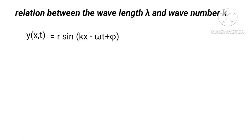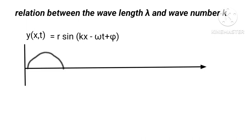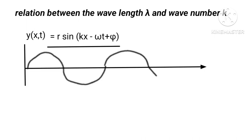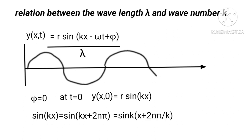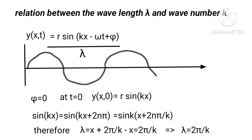Let us consider a transverse wave y(x, t) = R sin(kx - ωt) traveling along the x-axis as shown. The distance between two crests or two troughs is called the wavelength, usually denoted by λ. Taking φ = 0, the displacement at t = 0 is y(x, 0) = R sin(kx). Since sin(kx) = sin(kx + 2π), the distance between two crests is λ = 2π/k, which implies k = 2π/λ.